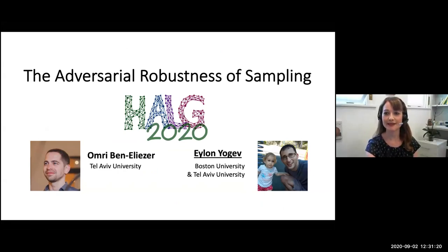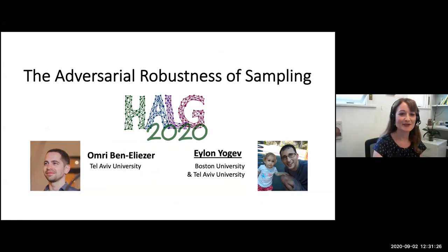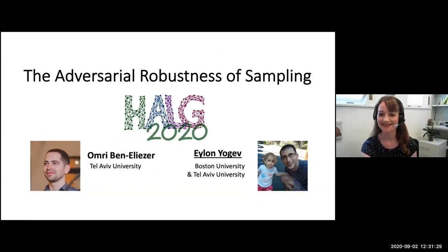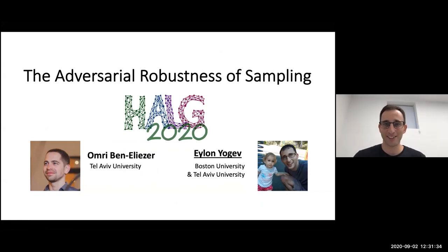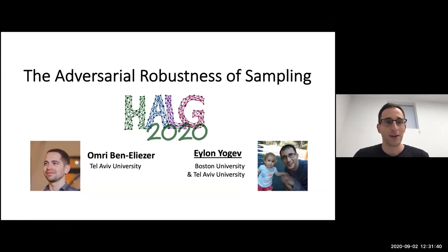For the second talk today, we are very happy to have Elan Yogev, who is going to talk about the adversarial robustness of sampling. Thank you, Merav. Thank you to the organizers. This is my first HALG. This is a joint work with Omri Ben-Eliezer about the adversarial robustness of sampling.